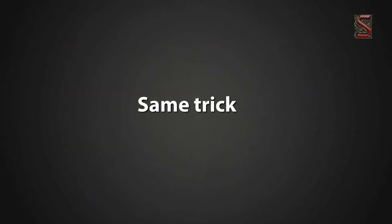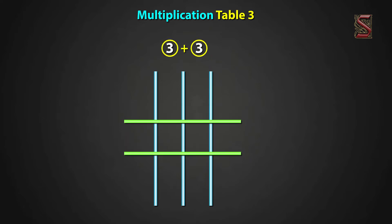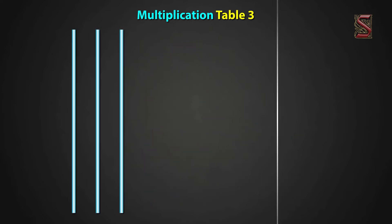Chintu, we use the same trick for multiplication table 3. Here, we have 3 standing lines representing table 3. We draw sleeping lines equal to the number of times we are repeating 3. The number of meeting points will be the answer. To represent 3 one times, draw 1 sleeping line. We have 3 meeting points. So, 3 one times equal to 3.